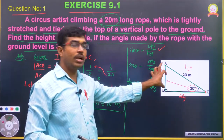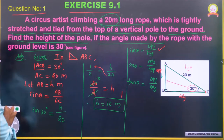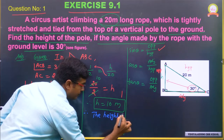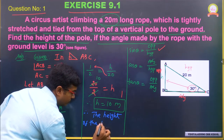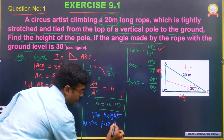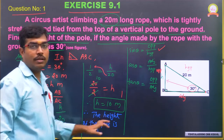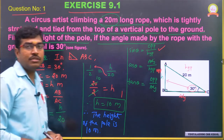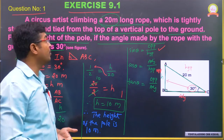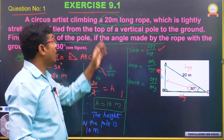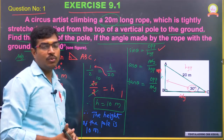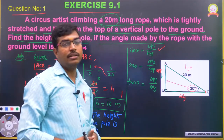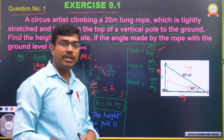Therefore, the height of the pole is 10 meters. I hope you all understood this problem. In the next upcoming video we will learn some more important sums from this exercise. Thank you all. Please share the video and like the video. Do not forget to subscribe.